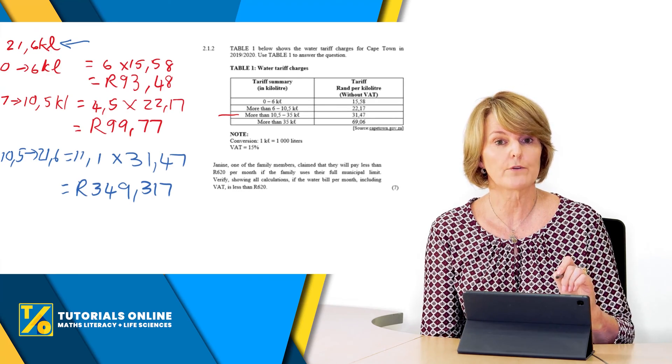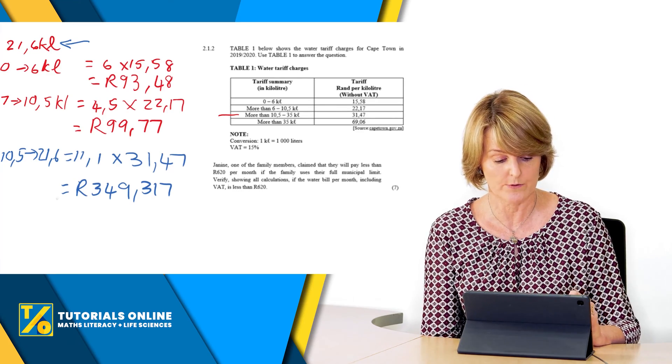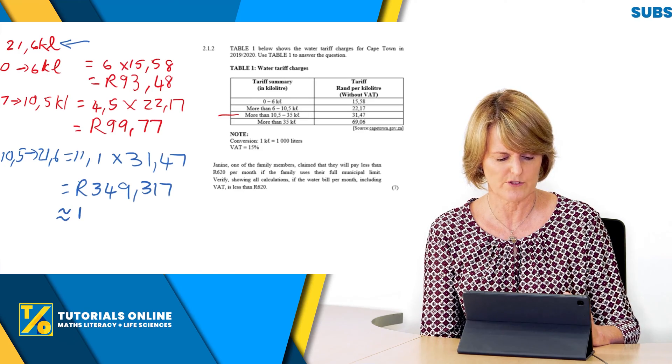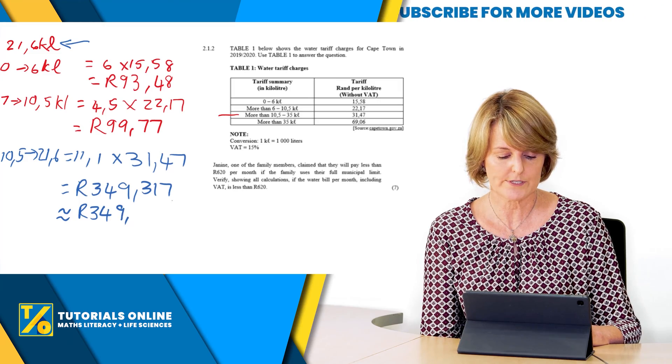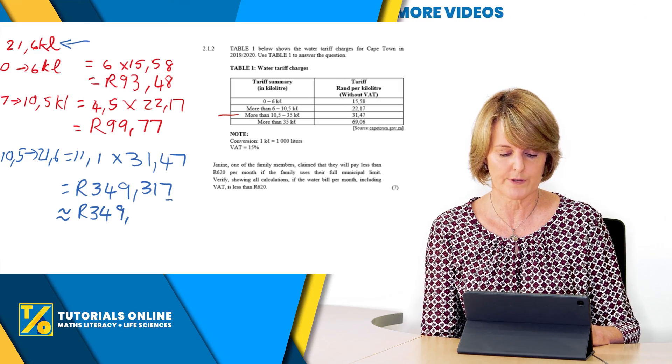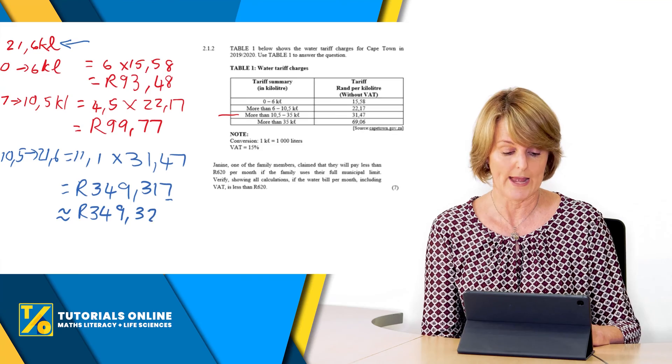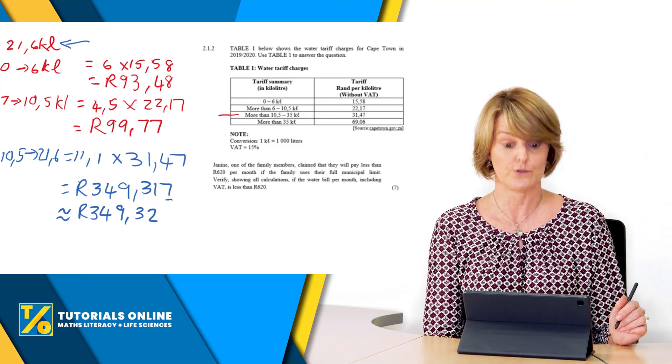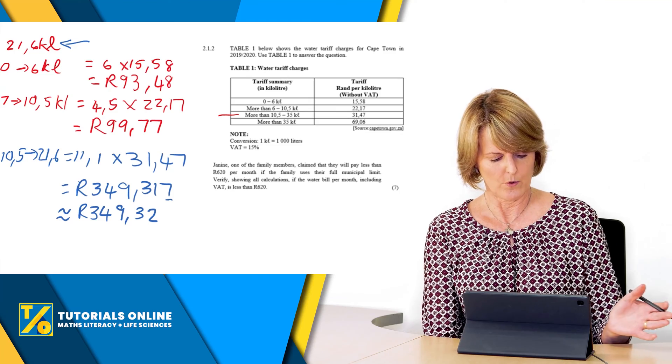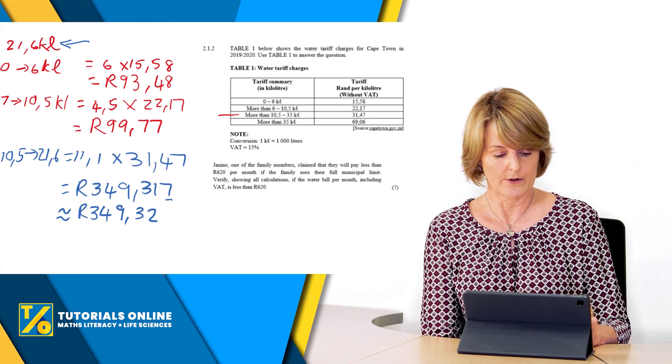Now what you're going to do, money you always round off to two decimal places, so that's a rule. I'm just going to do a little squiggle here just to show it's kind of rounded off. 349, and now because seven is bigger than five we're going to change the one to a two, and your final answer there will be 349 rand 32.